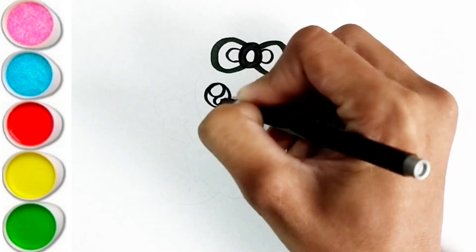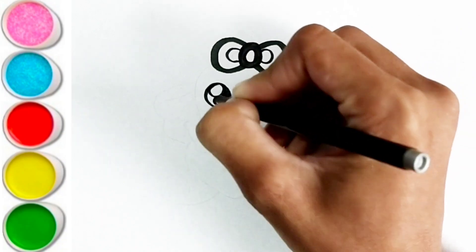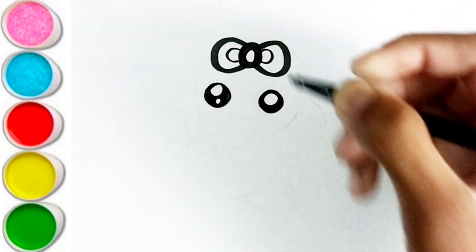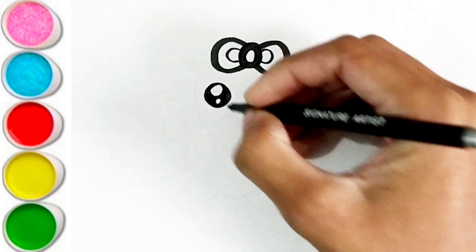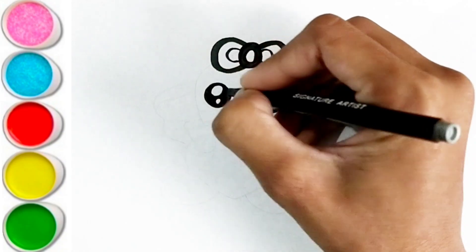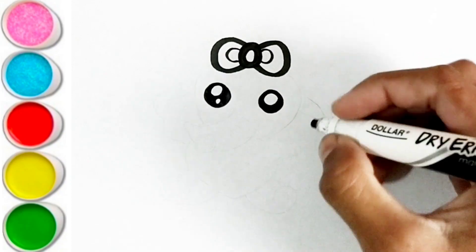J is for jump. J, j, jump. K is for kangaroo. K, k, kangaroo. L is for lion. L, l, lion.